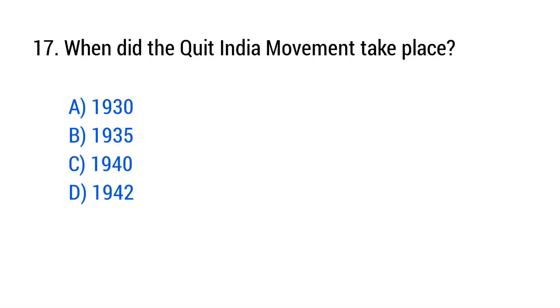Question No. 17: When did the Quit India Movement take place? The right answer is Option D, 1942.